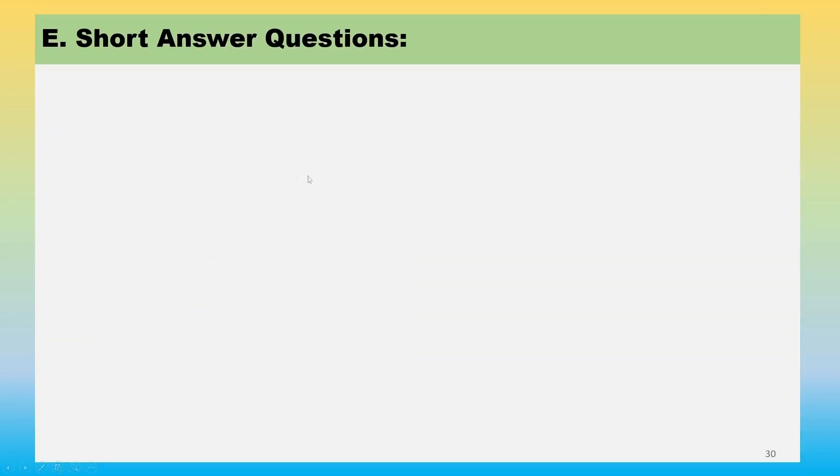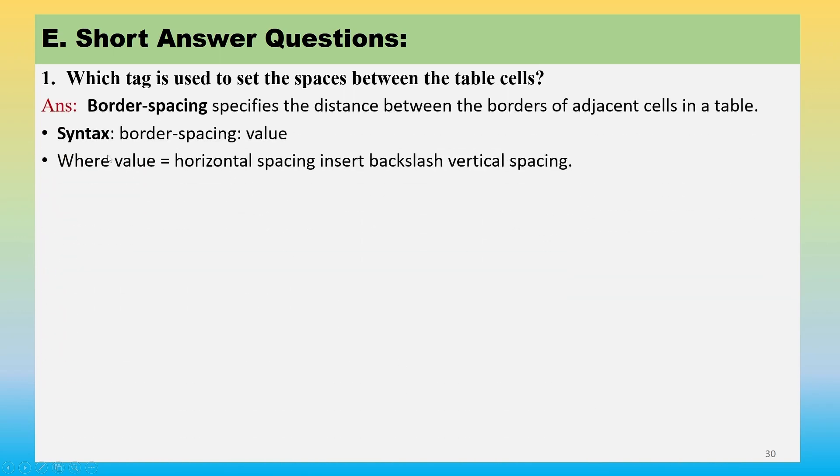Now come to short answer question. First question is: which tag is used to set the spaces between the table cells? Can you guess? There was border-collapse, border-spacing, collapse and spacing. So here border-spacing specifies the distance between the borders of adjacent cells in a table. Syntax was border-spacing then value, where value was horizontal spacing backslash vertical spacing.